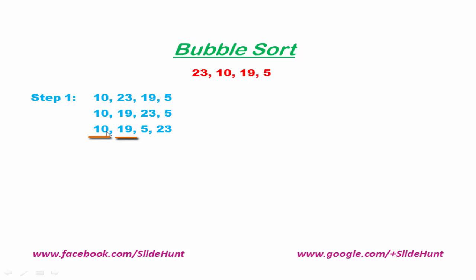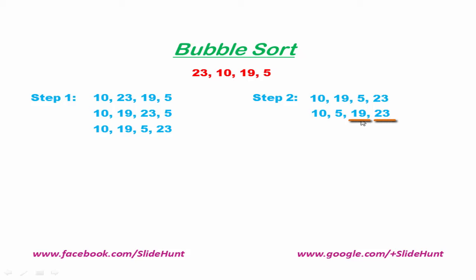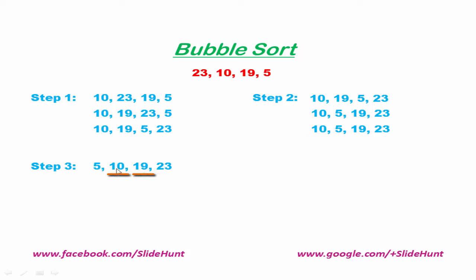Similarly we write step 2. First we compare 10 and 19 — 10 is less than 19 so no need to swap. Then we compare 19 and 5 — 19 is greater than 5 so we swap. Then we compare 19 and 23 — 19 is less than 23 so no need to swap. Similarly we perform step 3. First we compare 10 and 5 — 10 is greater than 5 so we swap. Then we compare 10 and 19 — 10 is less than 19, no need to swap. Then we compare 19 and 23 — 19 is less than 23, no need to swap. Finally the numbers are sorted.